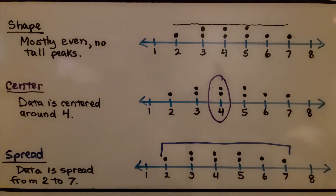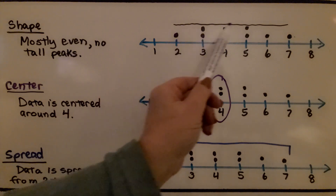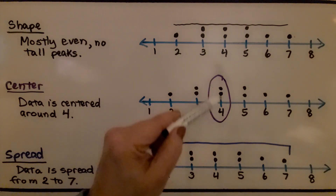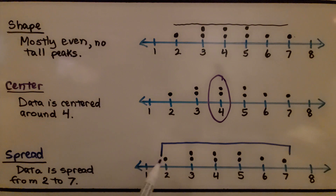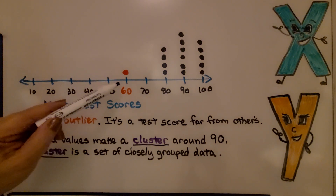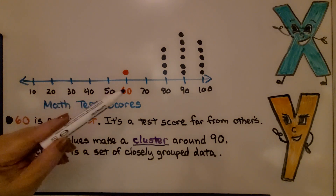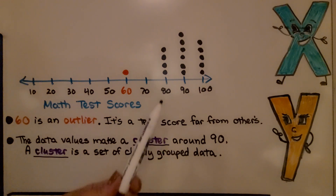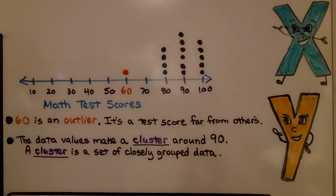When we're visually comparing dot plots, we can look at the shape — for this one it's mostly even with no tall peaks. The center would be around 4, and the spread would be between 2 and 7. Now take a look at this dot plot: we can see a data value at 60. This dot plot represents math test scores, and 60 is an outlier — a test score far from the others. The data values make a cluster around 90. A cluster is a set of closely grouped data. You'll learn more about clusters in 8th grade.